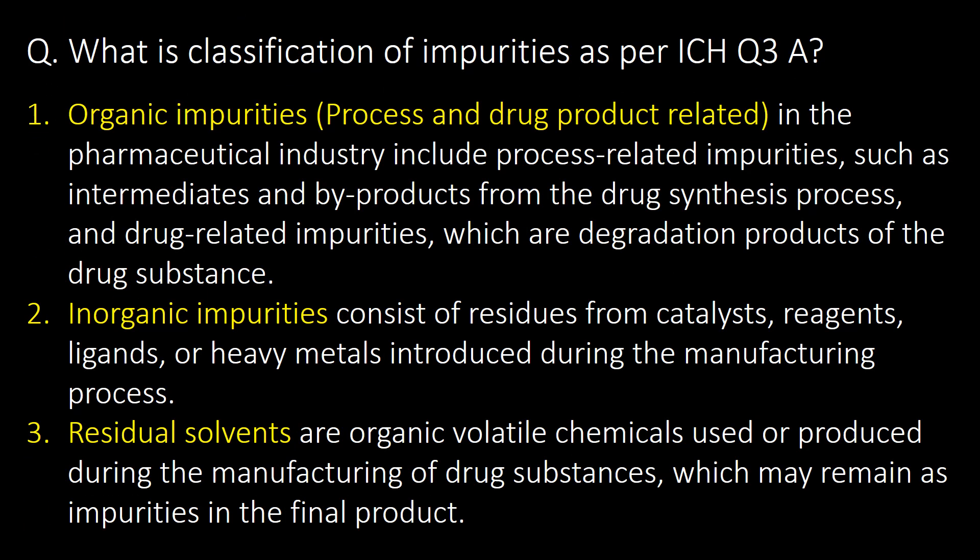What is the classification of impurities as per ICH Q3A guideline? ICH Q3A guideline classifies impurities in three major classes: first, organic impurities — process and drug product related; second, inorganic impurities; and third, residual solvents.